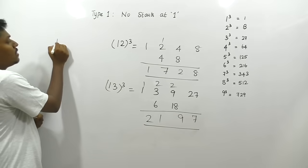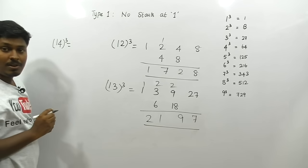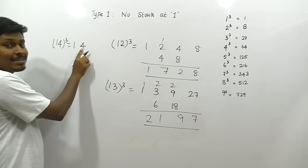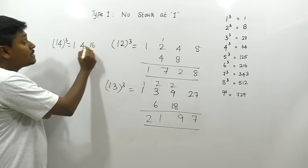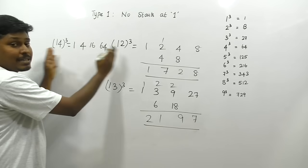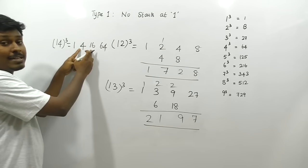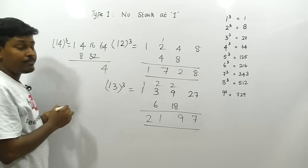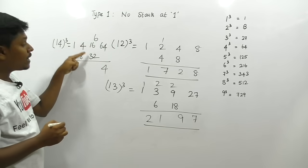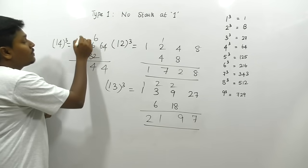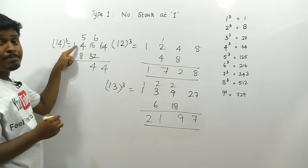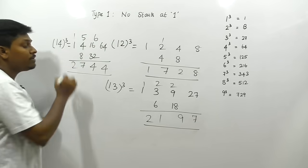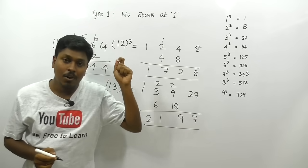For 14³: write 1, 4, then 4² = 16, then 4³ = 64. Double the center numbers: double 4 = 8, double 16 = 32. Adding from right: 64 → write 4, carry 6; 16+6=22, 22+32=54 → write 4, carry 5; 8+4=12, 12+5=17 → write 7, carry 1. So 14³ = 2744.